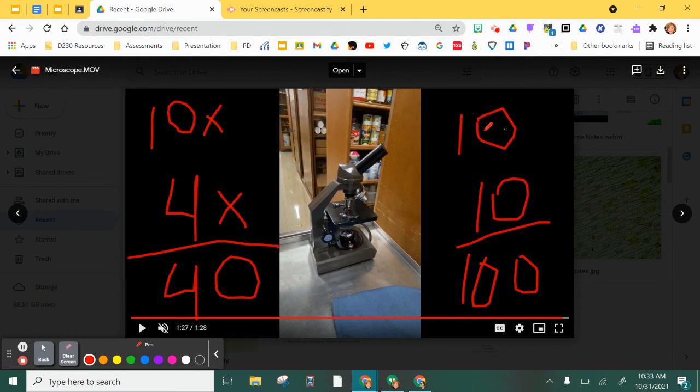The high power objective lens, again, eyepiece is 10x. Multiply it times what the objective is on the objective lens. You'll see a number with an x behind it. You'll be able to figure out how much that object has been blown up.